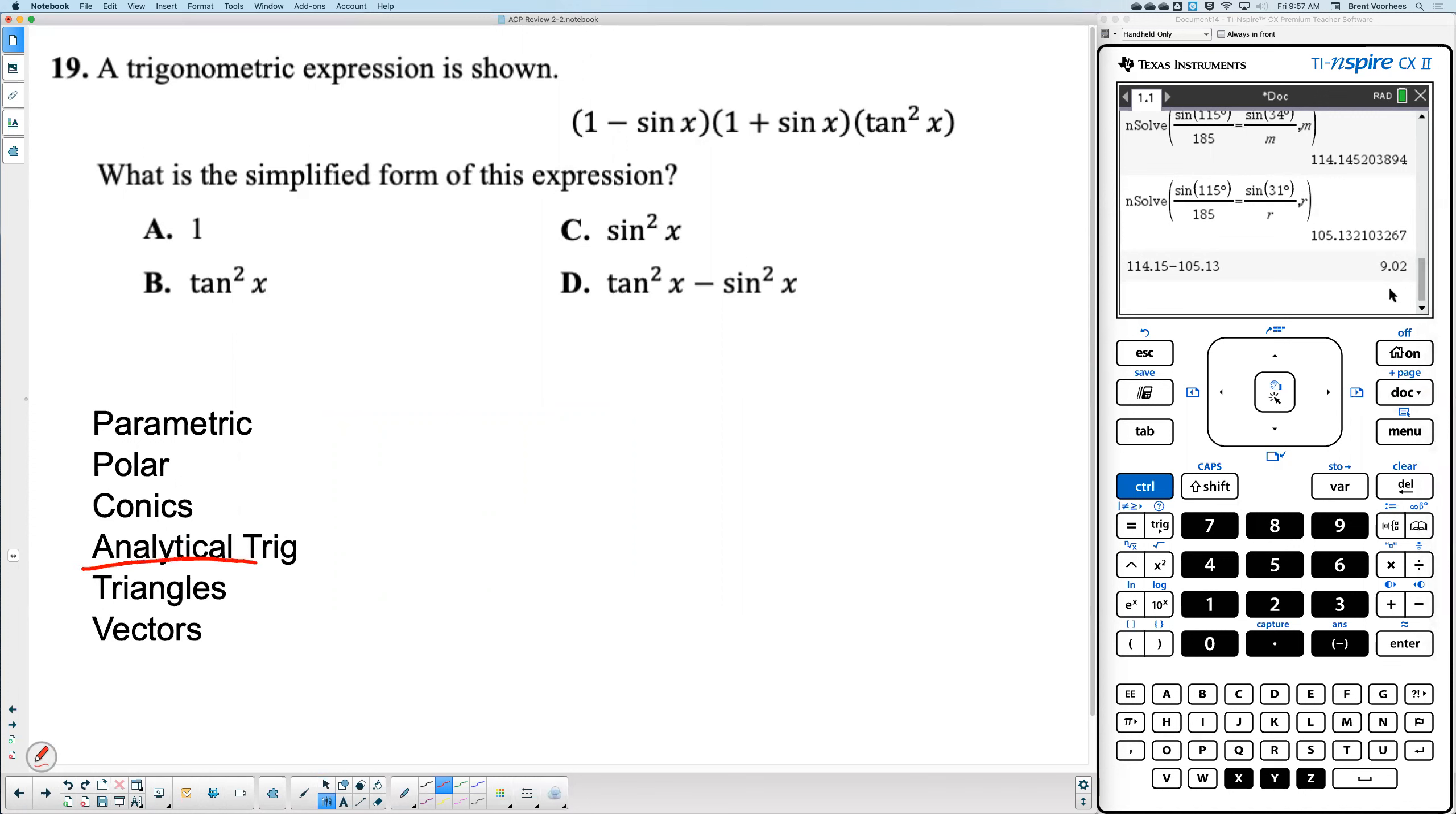That's right. Now, on analytical trig, this is the one I say you a lot of times need to know some information. This is one that you don't actually need to know information. How could we get this correct?